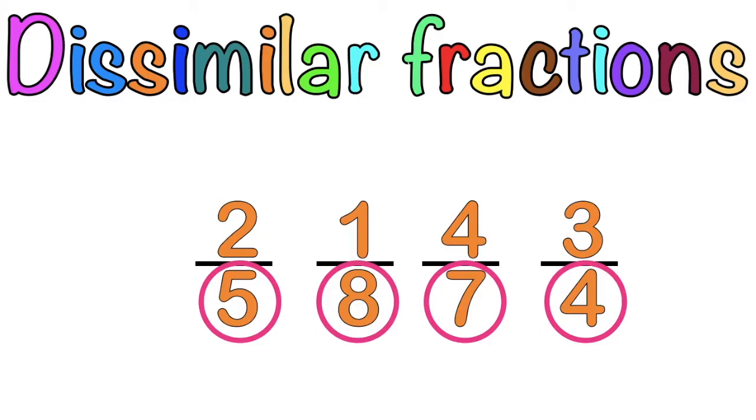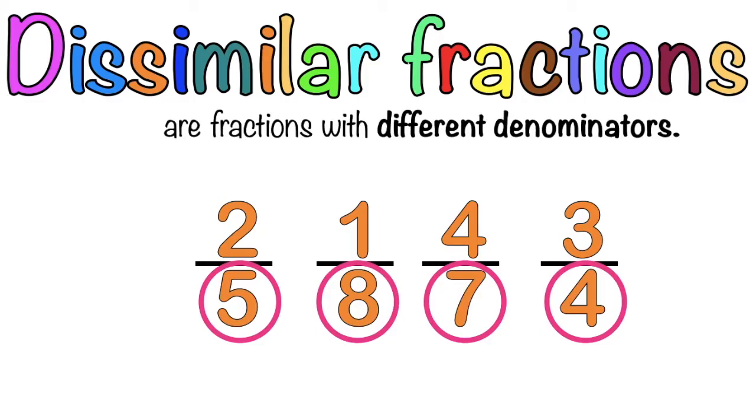So when you say dissimilar fractions, these are the fractions with different denominators. Is that clear?